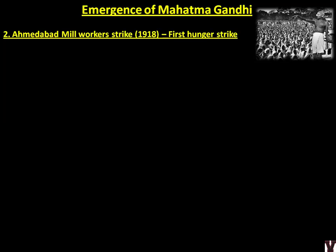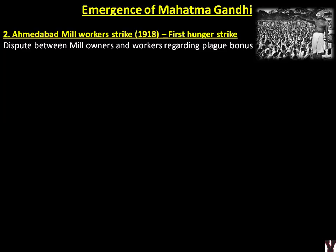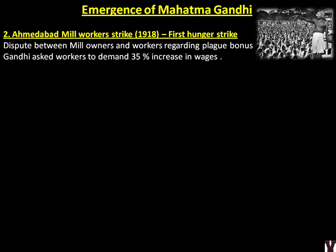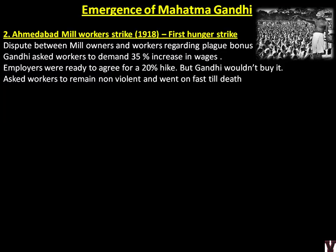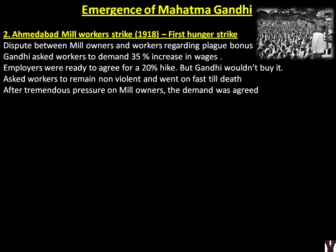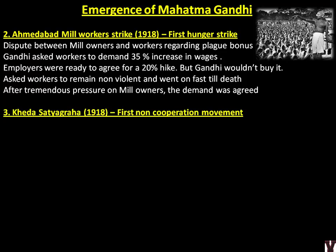Ahmedabad mill workers strike, 1918 — considered the first hunger strike by Gandhi. A dispute was happening between mill owners and workers regarding a plague bonus. Gandhi told the workers to demand a 35% wage increase. The employer offered only 20%, but Gandhi insisted on 35% and said he would go on hunger strike until death, asking workers to remain non-violent. After tremendous pressure on the mill owners, the demand was agreed — another win for Mahatma Gandhi.